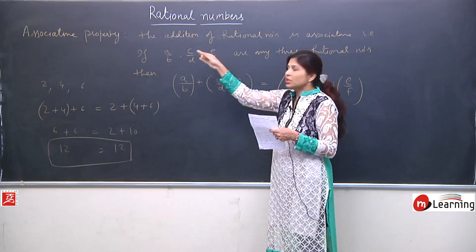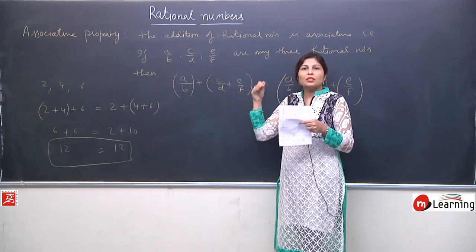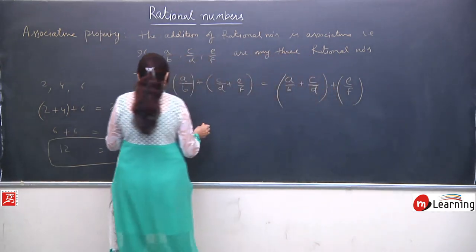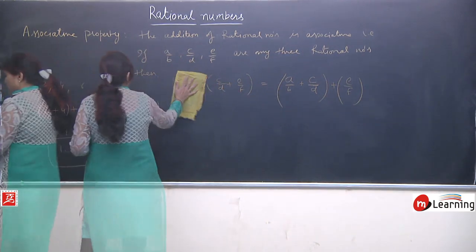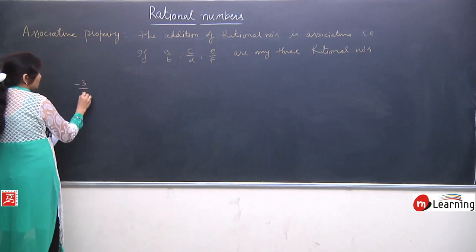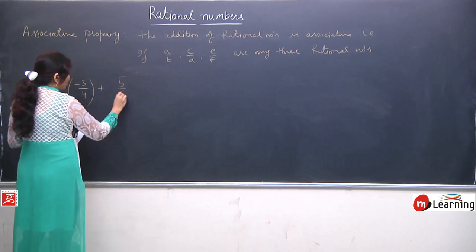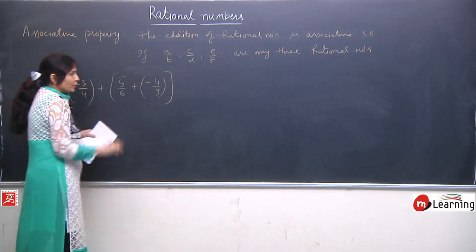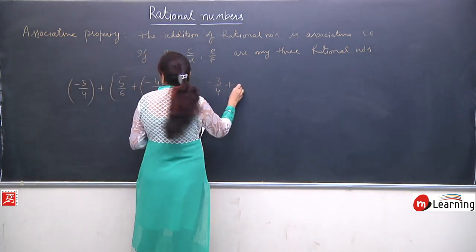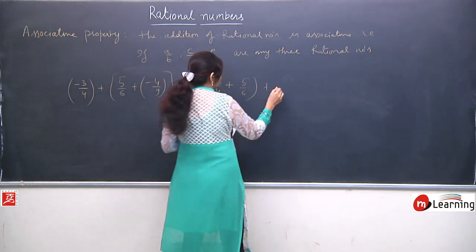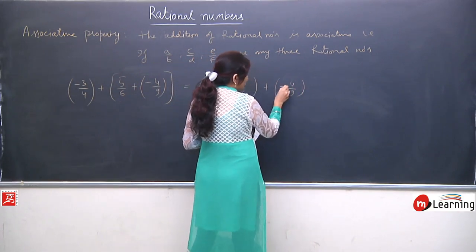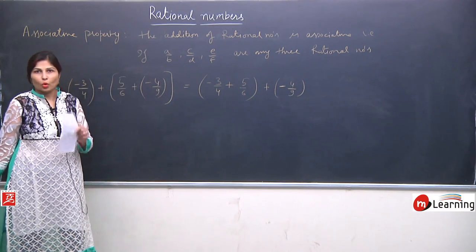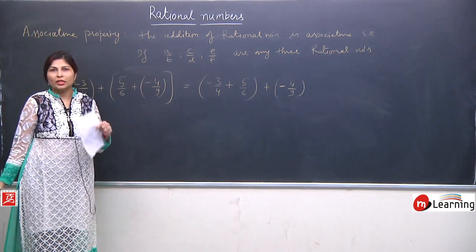Now we will verify the associative property for rational numbers. We have three rational numbers: −3/4, 5/6, and −4/9. We write them as (−3/4 + 5/6) + (−4/9) on the left, and −3/4 + (5/6 + (−4/9)) on the right. If LHS equals RHS, the property is verified. We solve the left-hand side first by opening the bracket.